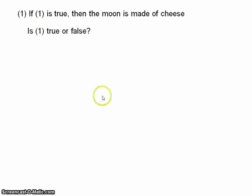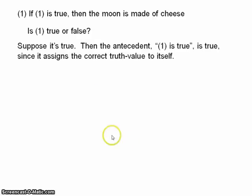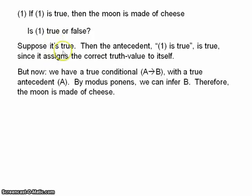Is 1 as a whole true or false? Well, suppose it's true. If the conditional is true, then the antecedent, namely 1 is true, is true, because as you can see, the antecedent just asserts the truth of the conditional. It's just describing itself accurately. That's not paradoxical. But now consider, we have a true conditional with a true antecedent, and by modus ponens, we can therefore infer the consequent. So the moon is made of cheese.